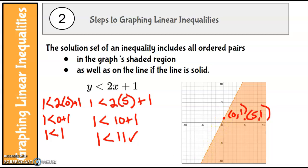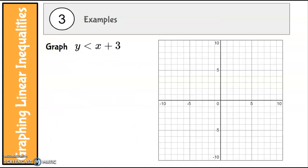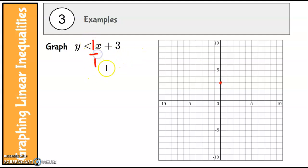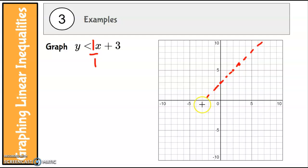Step 1: make sure it's solved for y — it is. Step 2: draw the line. We're going to start at y-intercept 1 — that's 1, 2, 3 — and our slope is 1 over 1, so we run 1 and rise 1. What kind of line should it be? There's no line under the inequality symbol, so this is going to be a dashed line, because everything on this line is not actually a solution — it's just the borderline.